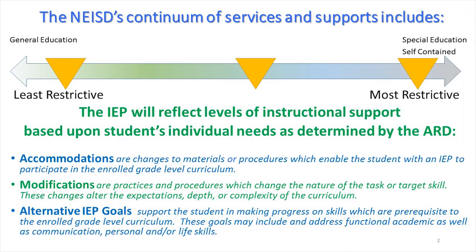The IEP goals and objectives are based upon the enrolled grade-level curriculum and address student needs. The ARD identifies the curricular or instructional supports which range between the least and most restrictive for the delivery of specially designed instruction. Accommodations support access to the enrolled grade-level curriculum through changes to materials or procedures that enable students with disabilities to participate meaningfully during instruction. Accommodations are often described as leveling the playing field for students who learn differently or who need to demonstrate their knowledge differently than their peers. Accommodations are intended to reduce or even eliminate the effects of student disability without reducing learning expectations. It is important to keep in mind that while some accommodations may be appropriate for instructional use, they may not be appropriate or allowable on statewide assessment.